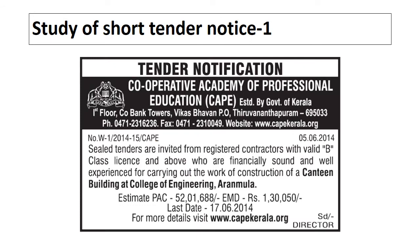Now let's study the short tender notice which I have cut from the newspaper Times of India. First of all I will read the whole tender notice, after that I will explain how to get information from this notice. This is the tender notification published by Cooperative Academy of Professional Education, established by Government of Kerala. The address, phone number, fax, and website are also given in the tender notice. Tender number is W1-201415-CAPE.